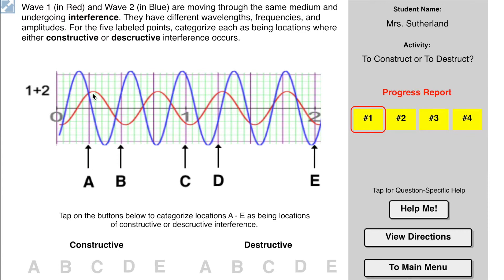So A, the red part and the blue part are both on the same side of equilibrium, so that's constructive. B, the red part is below, the blue part is above, so that's destructive. C, blue is above, red is below, that's destructive.